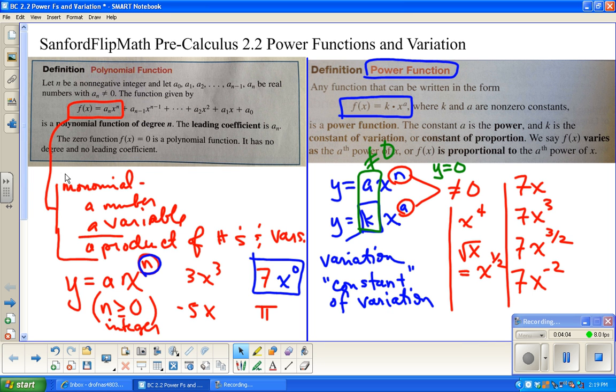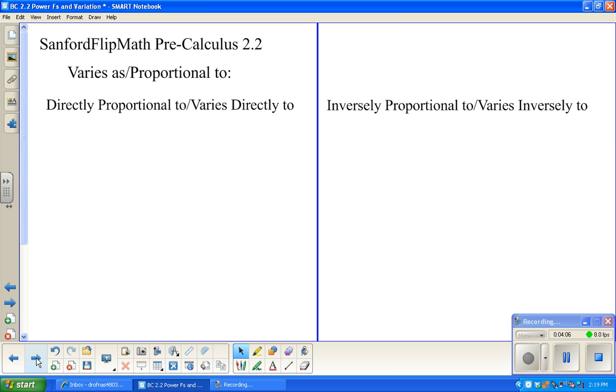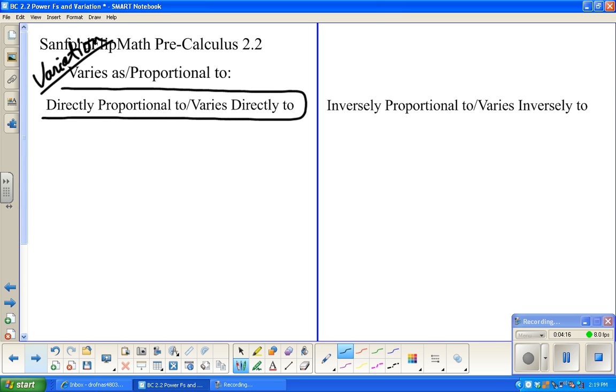Otherwise, all we're looking at is y equals zero, which is technically a monomial, but not a power function because you don't have any meaning for using the power. So we're going to branch this off a little bit, a little more specifically into variation.